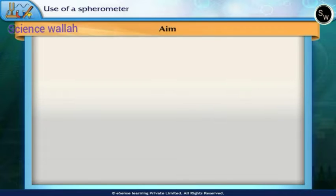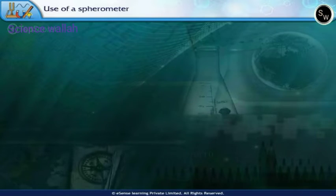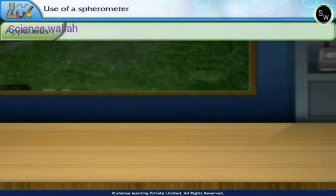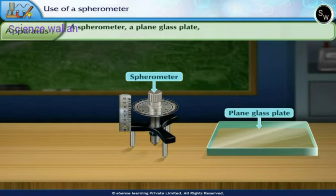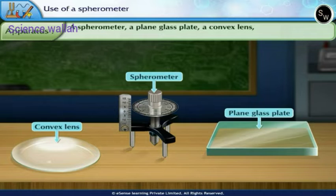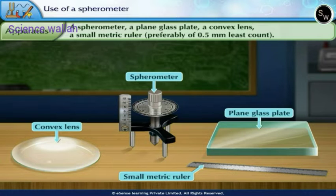Aim: To determine the radius of curvature of a spherical surface using a spherometer. Apparatus: a spherometer, a plain glass plate, a convex lens, a small metric ruler, preferably of 0.5mm least count.